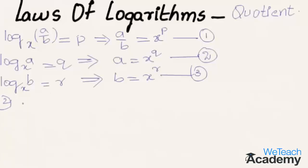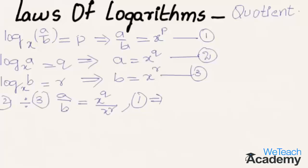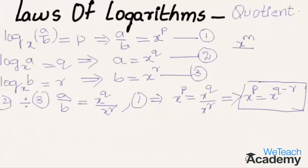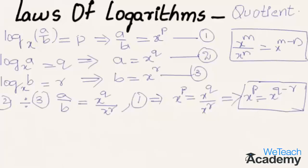Now let us divide equation 2 by equation 3. We get a/b equals x raised to the power q divided by x raised to the power r. From equation 1, a/b is x to the power p, so x to the power p equals x to the power q divided by x to the power r. Using the law that x^m divided by x^n equals x^(m minus n), this gives x to the power p equals x to the power q minus r. Since the bases are equal, we equate the powers to get p equals q minus r.